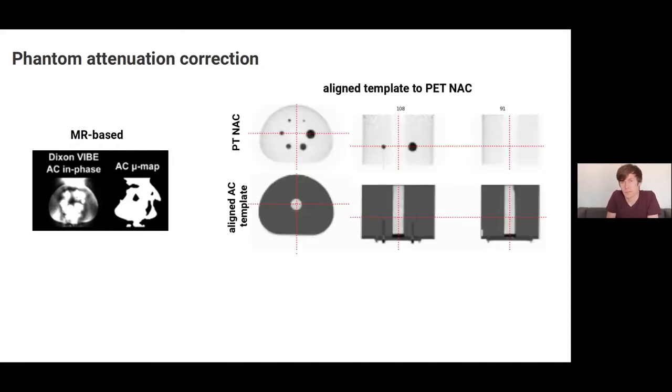To my mind, a much better approach that is also used by other vendors is to not base the phantom attenuation correction on MR images, but rather to rely on templates. So what we can do is we can generate templates, attenuation templates of the phantoms by scanning them in a CT or in a transmission scan. And we can then simply align those templates to a PET reconstruction that was performed without attenuation correction, as shown here on the right. And once we have the aligned attenuation, we can perform a reconstruction without attenuation correction that doesn't suffer from attenuation artifacts.